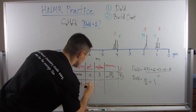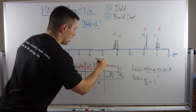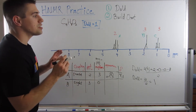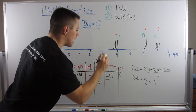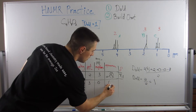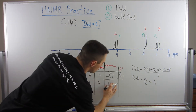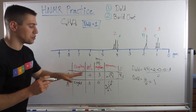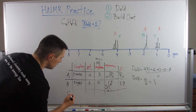Peak B is a singlet with an integration of three and zero neighbors — n+1 = 1 means n = 0. Three hydrogens at one position with no neighbors means it's terminal, a methyl group. The next position is either quaternary (no hydrogens) or next to a carbonyl, which also has no hydrogen. The chemical shift is about 1.9 to 1.8.